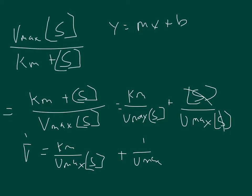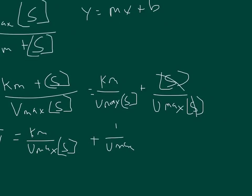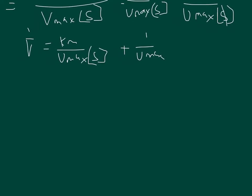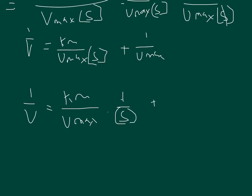The last thing we're going to do is break out this term as a multiplication of a fraction. So 1 over V is equal to Km over Vmax times 1 over the substrate concentration, plus 1 over Vmax. You'll notice that we now have the format of Y equals Mx plus B.